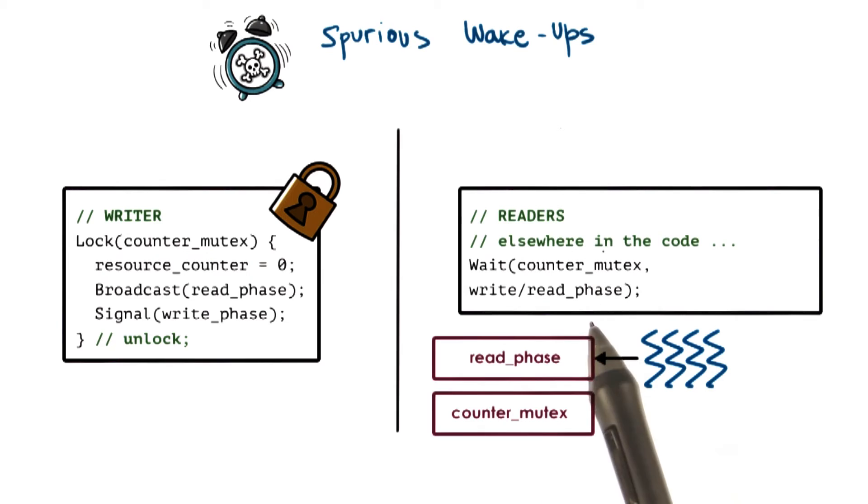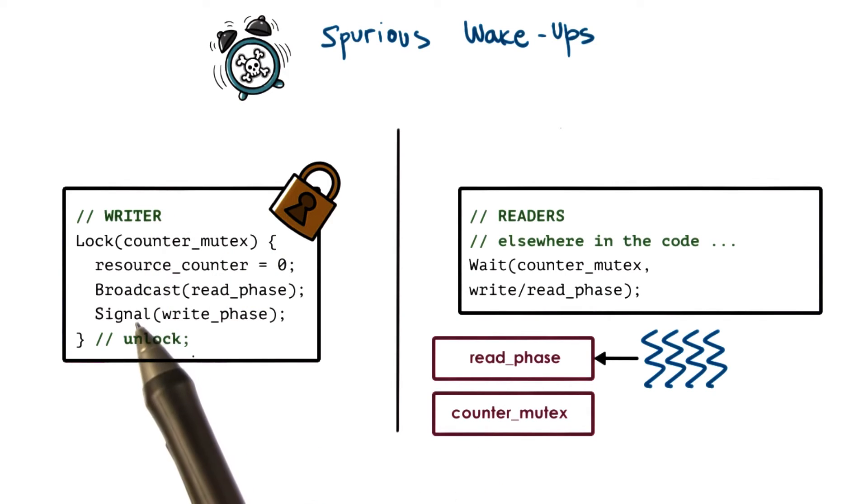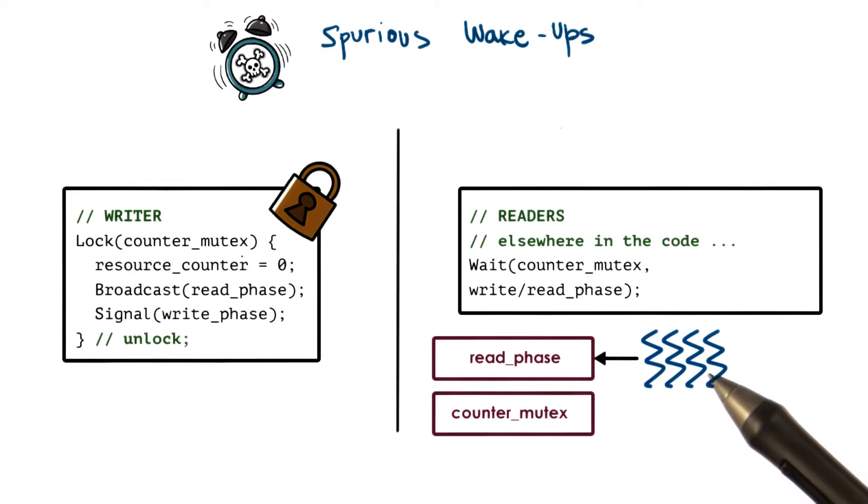We explained this before. So that means the very first thing that these threads will do, they'll try to reacquire the mutex. The mutex is still held by the writer thread, the writer thread still has the mutex. So none of these threads will be able to proceed.